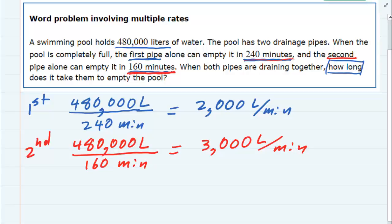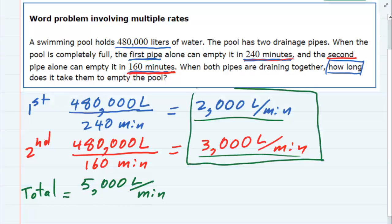Now we're going to put those two pipes together. So for a total, the rate is 2,000 plus 3,000 liters per minute. So it is draining as a total of 5,000 liters per minute, just adding these two pipes together.